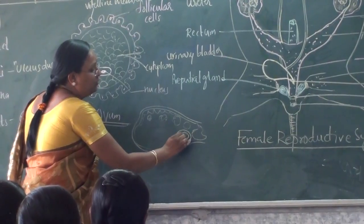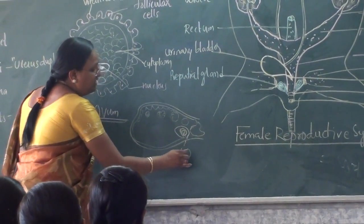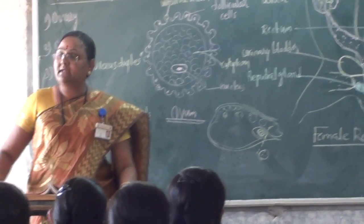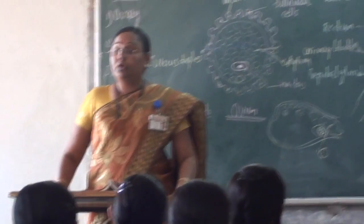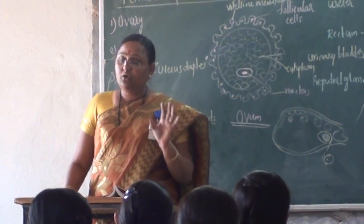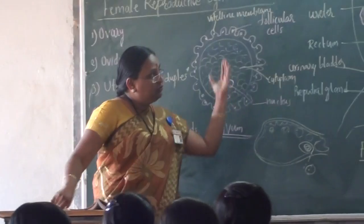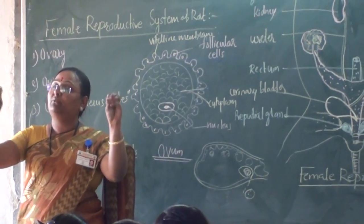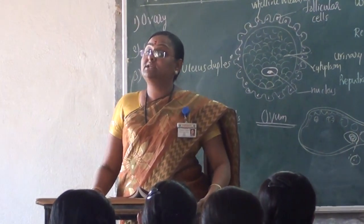If it is an ovum, the ova interrupter will discharge. The oviduct will produce the ovum. In this case, the fat body will discharge the ova from the ovary.